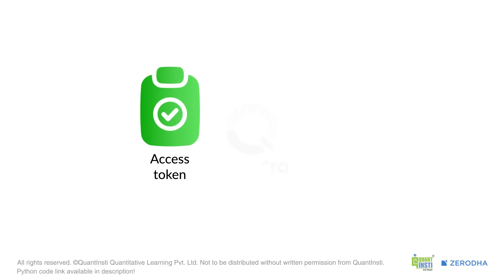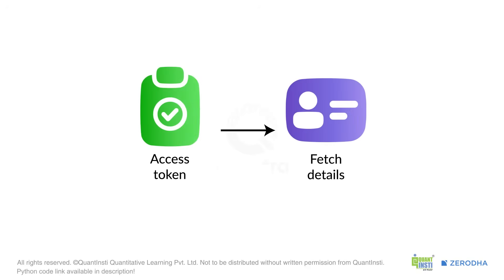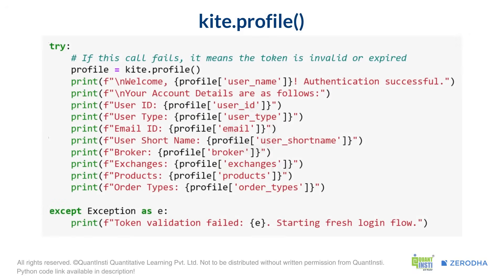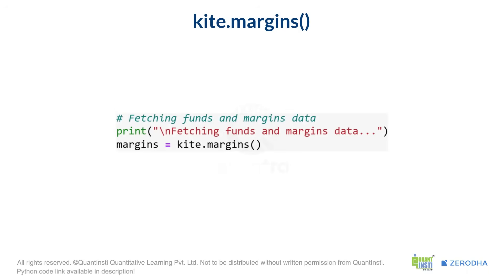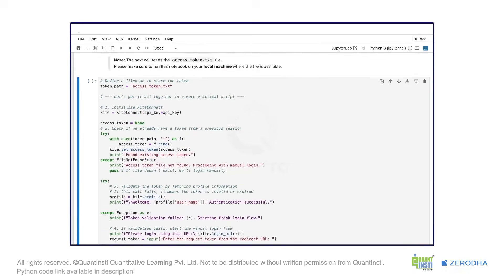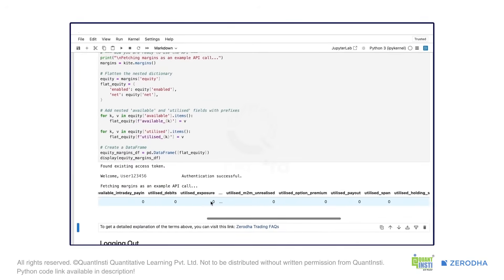Once a valid access token is set, we can fetch your basic account details using the Kite.Profile method. This will display information such as your user ID, user type, email ID, and the exchanges and products you have access to. Beyond your profile, you can also fetch your funds and margin data using the Kite.Margins method. In this Python code, we fetch the details for the equity segment and then transform this data into a user-friendly Pandas data frame for easy viewing in a tabular format.